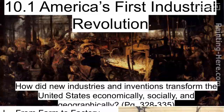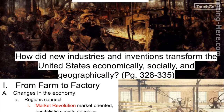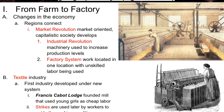Let's get started with the first slide of the lecture: From Farm to Factory, Changes in the Economy, Regions Connect. So what's a region? A region would be like the United States divided into four parts — north, south, east, and west. Specifically, at the start of our nation, we mainly had north, south, and west. So we're talking about the regions and how they're connecting.